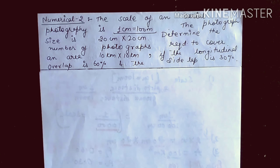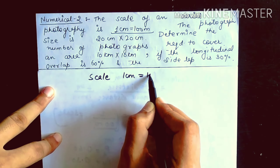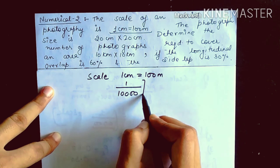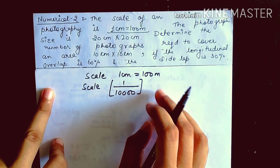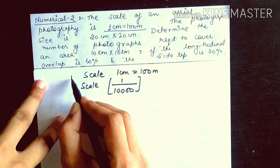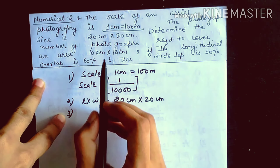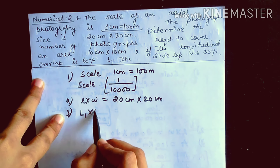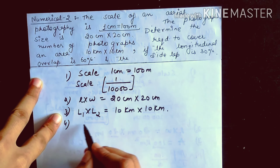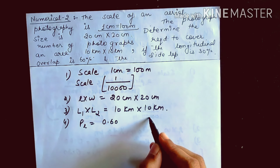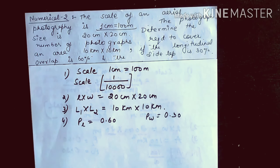Now let us look at numerical number 2. The scale of an aerial photograph is 1cm = 100m, which gives a representative fraction of 1:10,000. The photograph size (small l × small w) is 20cm × 20cm. The area is given as 10 km × 10 km (L1 × L2). Longitudinal overlap PL = 60% (0.60) and side overlap PW = 30% (0.30).